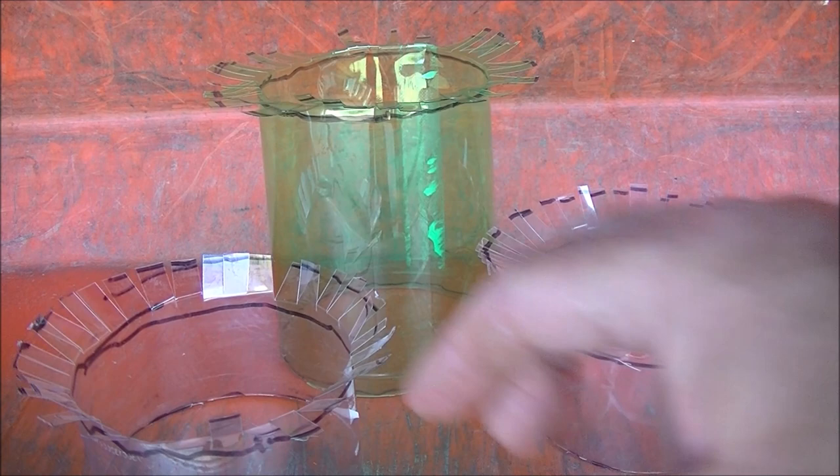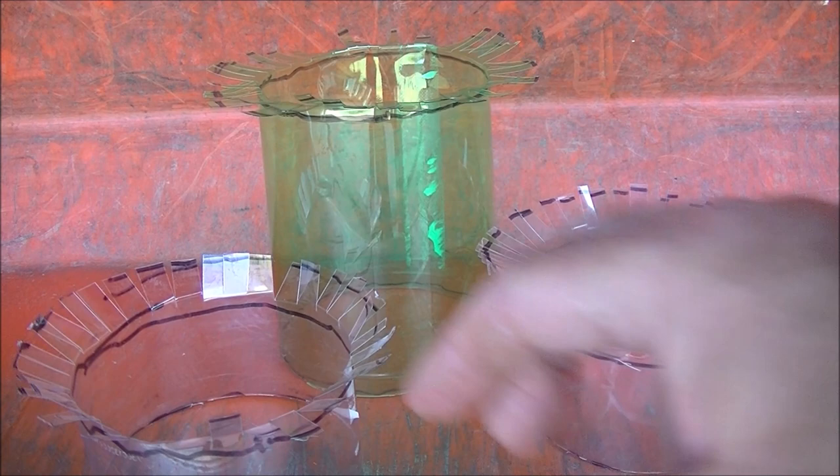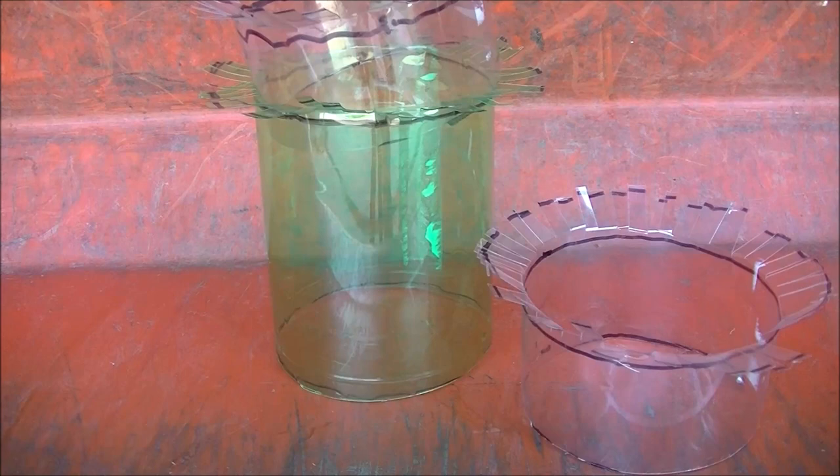Now we have all three sections done. We're just simply going to take the smaller ones and place it in the larger one all the way down, so we have all those fringes. Let me assemble it and I'll show you how it's done.